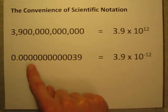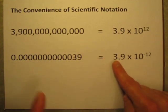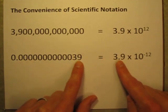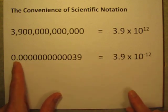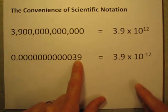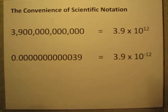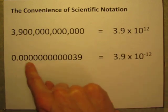Same thing down here. This really small number, I still have the 3 and the 9 there, but I'm moving the decimal point 12 places in the opposite direction, and it's 10 to the negative 12th power. The negative exponent is for small numbers.